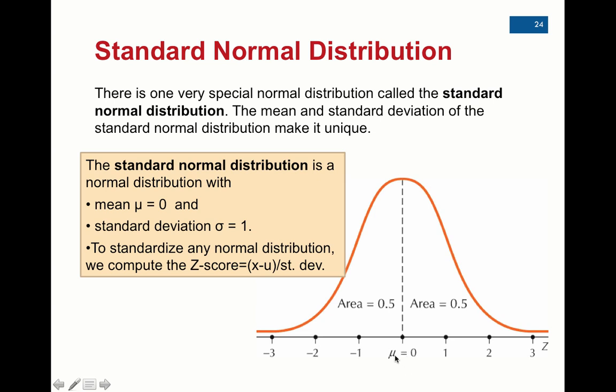Remember the z-score for the mean? It's equal to zero because when you take the mean and you subtract the mean in the formula, you get zero. Then we have one standard deviation above, two and three standard deviations above, one, two, three standard deviations below. Notice the area to the left of the mean is still 0.5 and the area to the right of the mean is still 0.5. And the mean of the standard normal distribution is always 0. So remember, these are just z-scores down here.